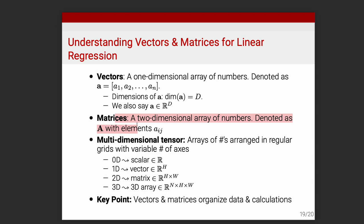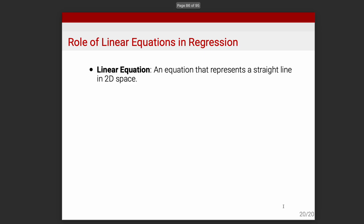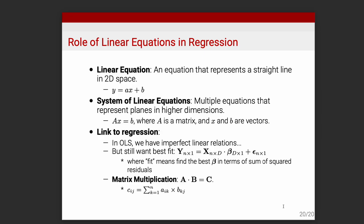In linear algebra you can go further to multi-dimensional arrays or tensors — arrays arranged across regular grids with a variable number of axes. A scalar is a tensor with zero dimensions, a vector has one dimension, a matrix has two, and a 3D array has three. You can stack matrices together to represent, for example, time series data. Matrices and vectors help us organize data and calculations.